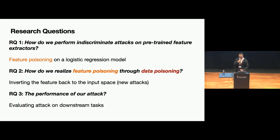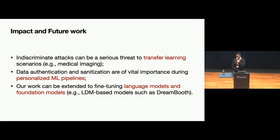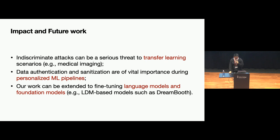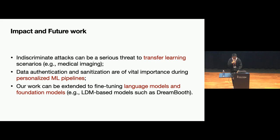To summarize, this presentation answers three research questions: how we approach the problem using feature poisoning as a surrogate, how we invert it back to input space, and how we examine attack performance. The key impact is to remind people that indiscriminate attacks can be a serious threat upon transfer learning, which is used every day for personalized tasks such as medical imaging. Data authentication and sanitization are of vital importance and are our next steps. Our work can also be extended to fine-tuning language models and foundation models — for example, LDM-based models such as DreamBooth, which is also an active project. Thank you.